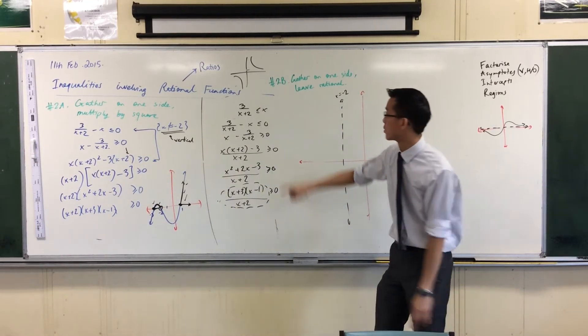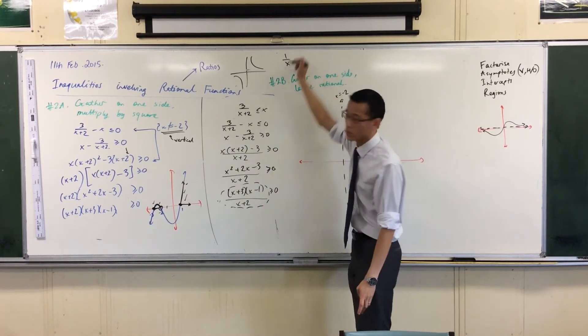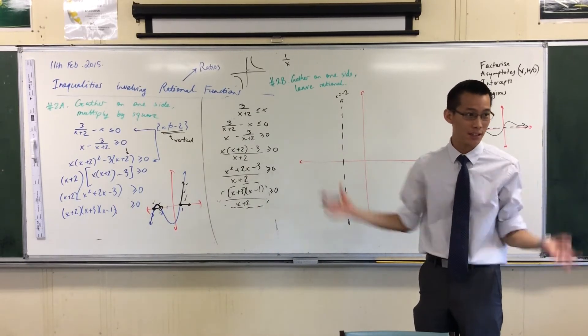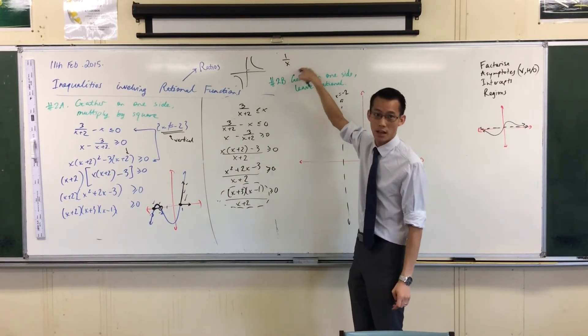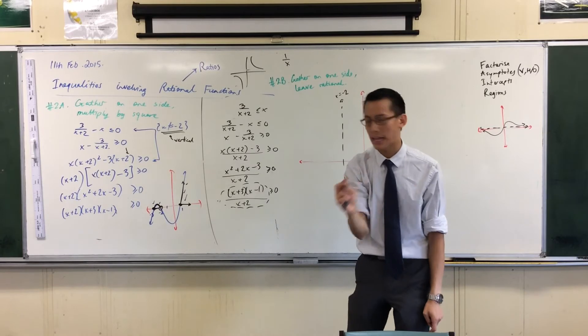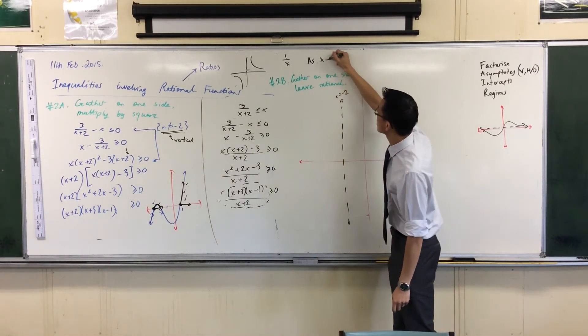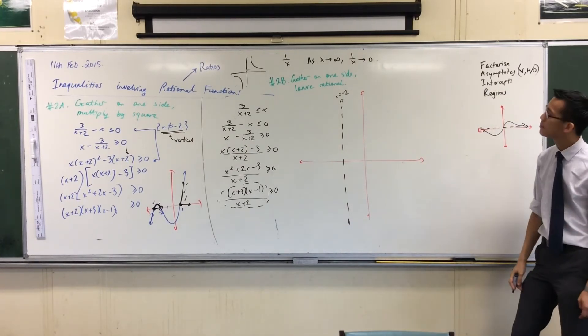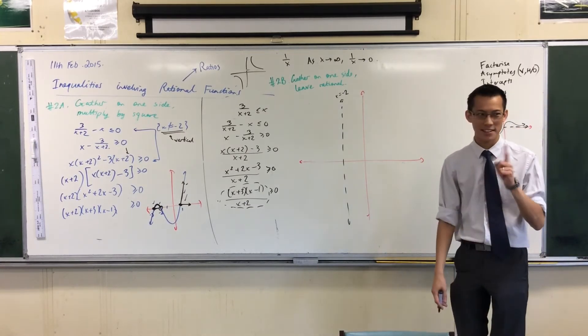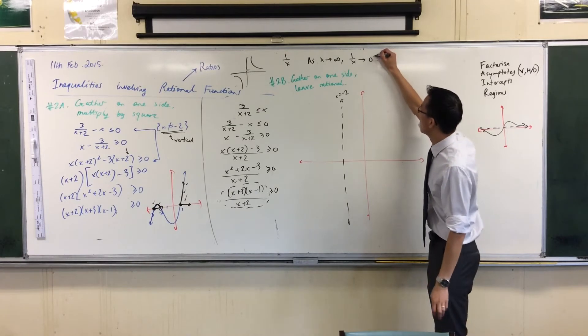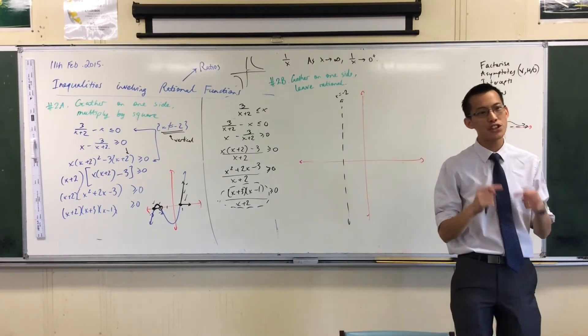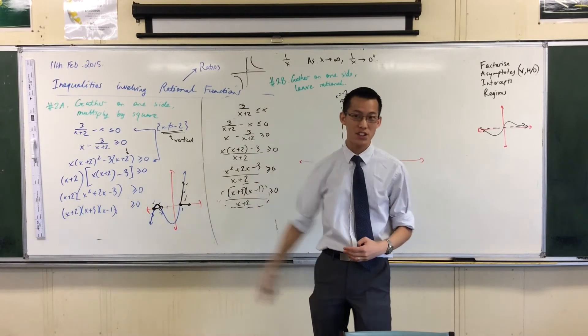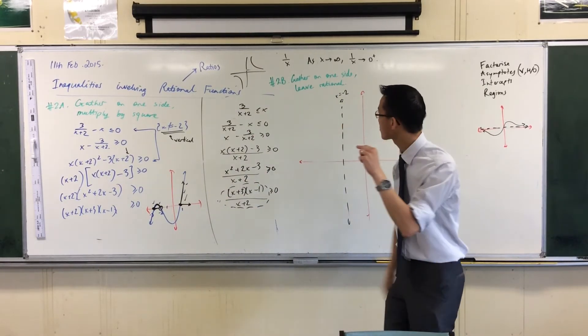Now if horizontal and oblique asymptotes are about what's happening at really negative values and really positive values, the simplest way to work them out is by putting really large values into your function. Let's look at simple examples. This is one on X. When you put astronomically large numbers into X, 100, 1000, 10000, 10 million, what's happening to this whole thing? It's getting tiny. More specifically, as X approaches infinity, 1 on X approaches 0.